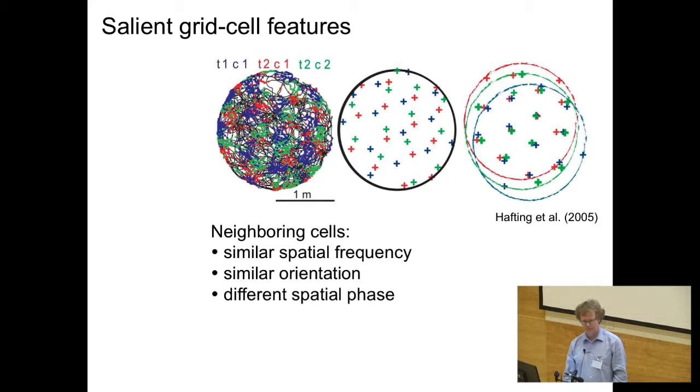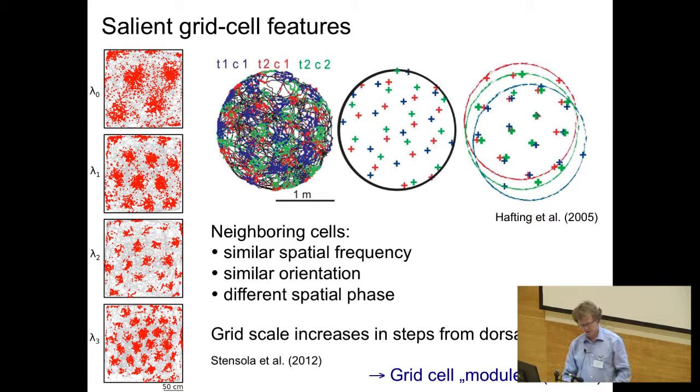If you shift the firing fields relative to each other by the right amount, you can get them to perfectly match, which means nearby neurons have the same spatial frequency and similar orientation, but differ in spatial phase. If you record over larger distances in the entorhinal cortex, you'll see that the wavelength, the spatial frequency, increases depending on where you record. So it seems there is a way to represent space. The Nobel Prize in 2014 was given both to O'Keeffe for place cells and to Edward and May-Britt Moser for their discovery of grid cells.